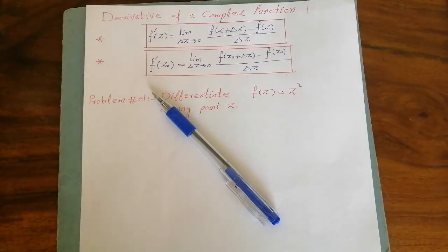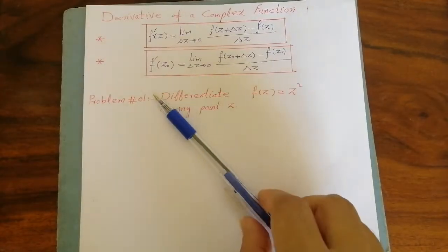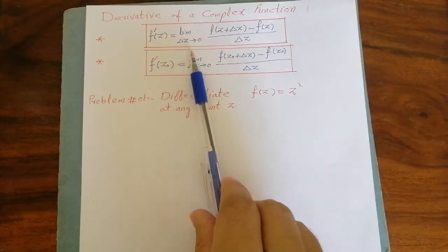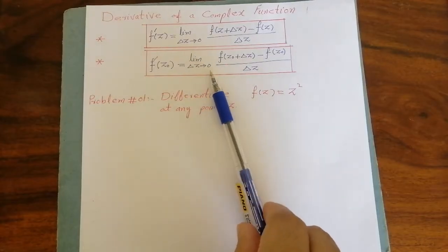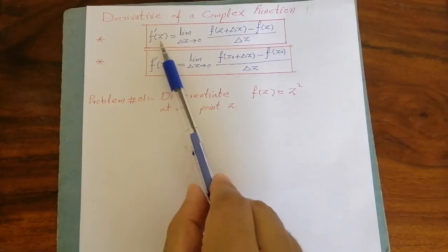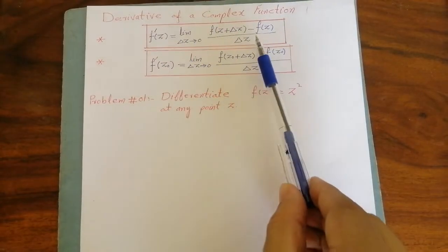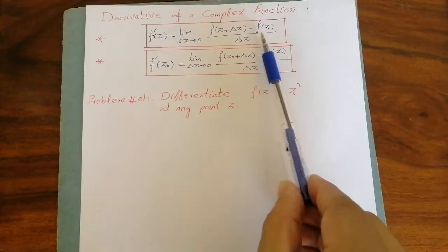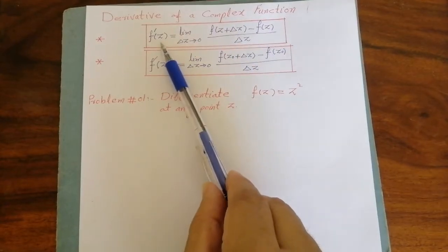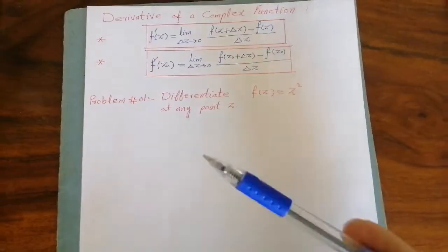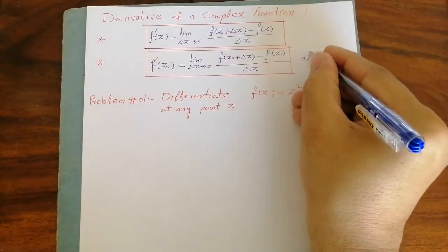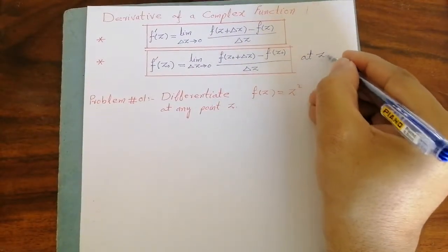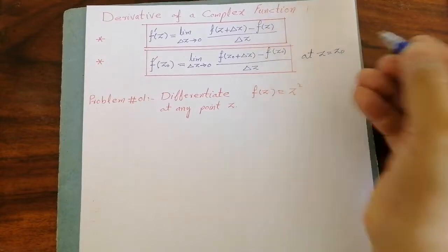Bismillahirrahmanirrahim. Assalamu alaikum. Derivative of a complex function. This lecture is a part of the previous lecture in which we have studied that if we are given a function f of z, then we can use this formula to find its derivatives, or we can use this formula to find its derivatives at a point z equal to z naught.